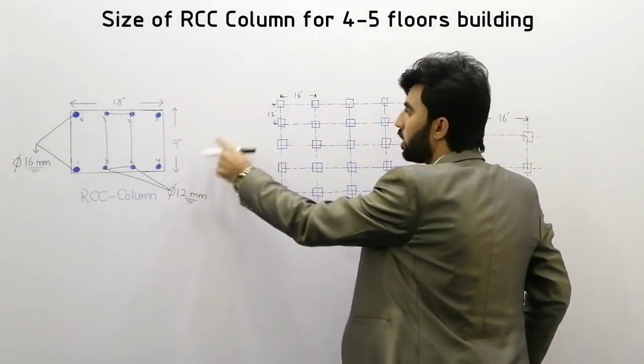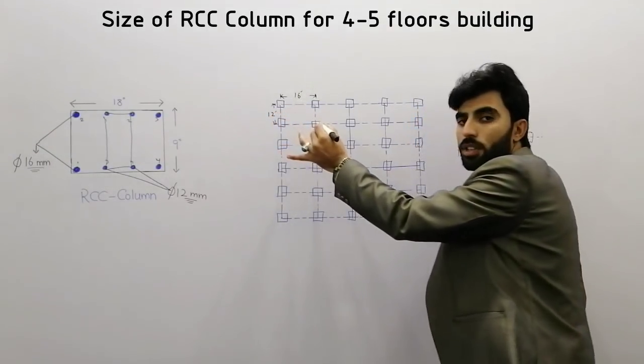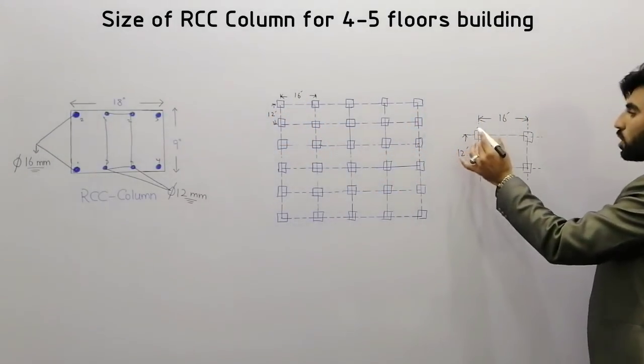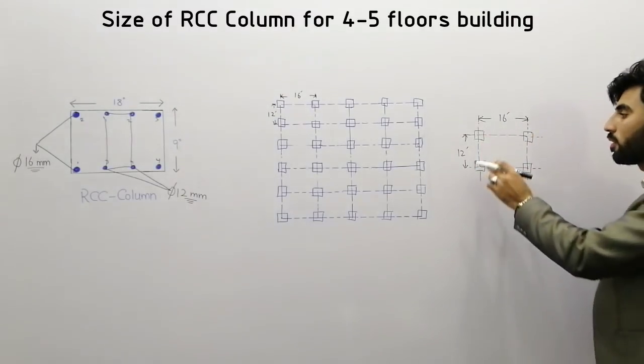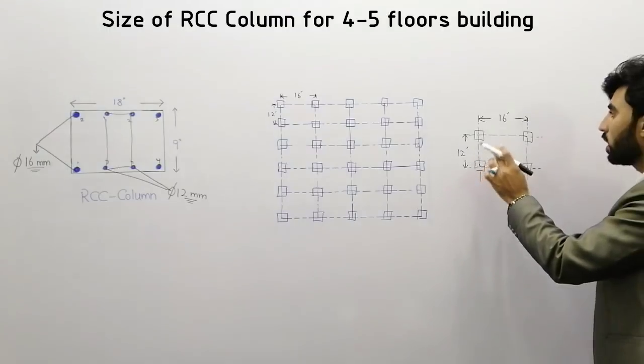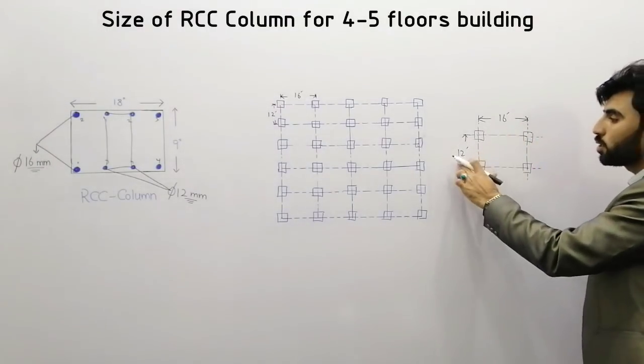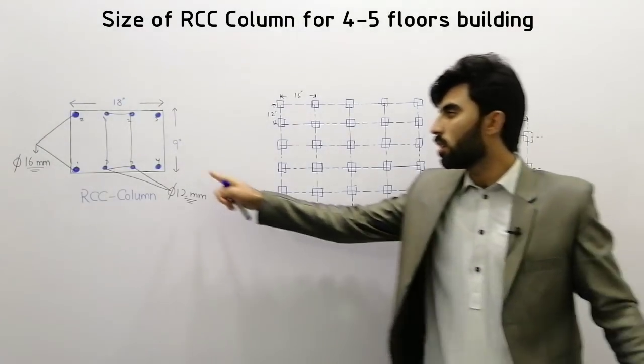Size of the column spacing here is 12 feet and 16 feet. This is for one room or we can say for one hall or for any apartment here.